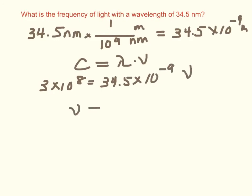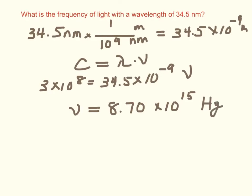So the frequency comes out to be 8.70 times 10 to the 15th. The units are just hertz. And that's really all there is to waves, frequency, and wavelength.